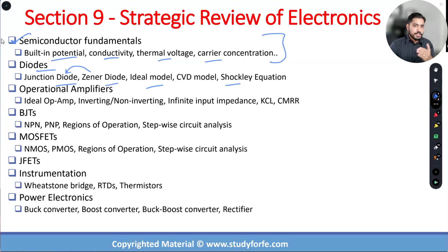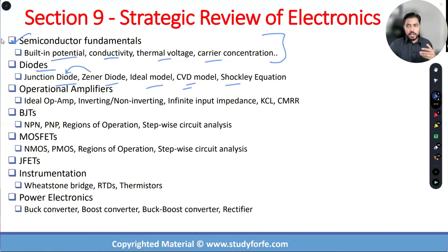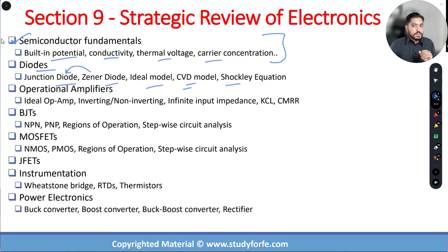The CVD model — unless mentioned otherwise, you always assume a voltage drop of 0.7 volts when dealing with diodes. Sometimes a straightforward diode analysis can be tricky because of the CVD model. The other thing to worry about when you have multiple diodes is your assumptions — it's a trial-and-error process. In my opinion, a question involving more than three diodes is just too much for a three-minute-per-question exam.